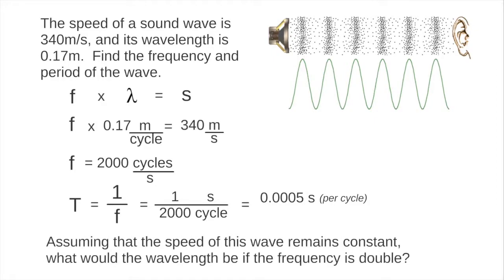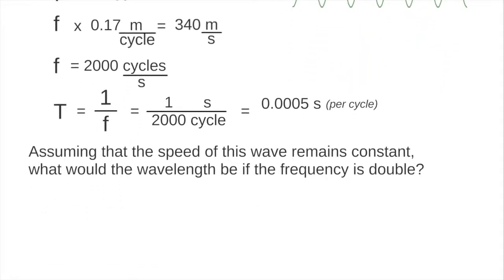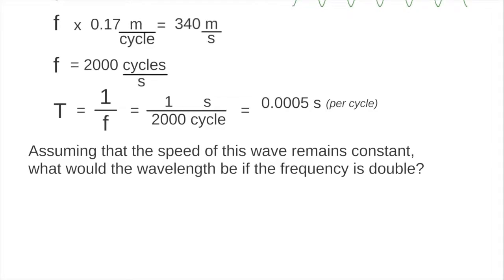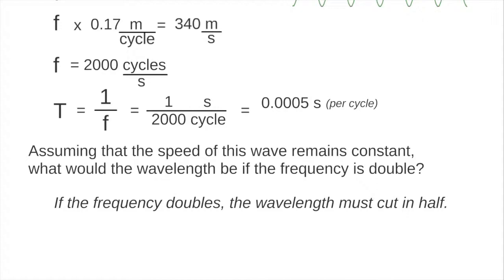Now, what would the wavelength be in the above wave, assuming that the speed remains constant, but the frequency is doubled? Holding speed constant makes this a constant product. That means wavelength is inversely proportional to frequency. So if frequency doubles, the wavelength must cut in half. 0.17 meters divided by 2 is 0.085 meters.